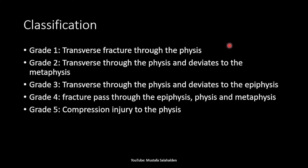For the classification we have five grades. Grade 1 is a transverse fracture through the physis. Grade 2 is a transverse fracture through the physis that deviates to the metaphysis. Grade 3 is a transverse fracture through the physis that deviates to the epiphysis. Grade 4 is a fracture that passes through the epiphysis, physis, and metaphysis. Grade 5 is a compression injury to the physis.